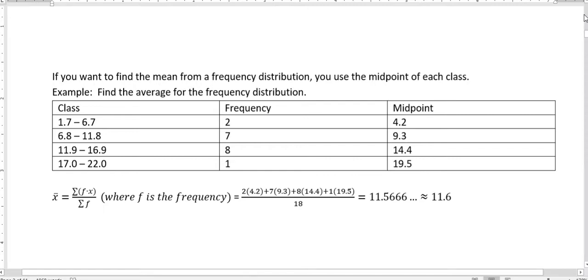To find the midpoint, you just add the lower class limit and the upper class limit and divide by 2. Now notice that the class width here, which you find from subtracting 1.7 from 6.8, the class width is always going to be 5.1 here, and I want you to recognize that the midpoints also have a difference of 5.1.